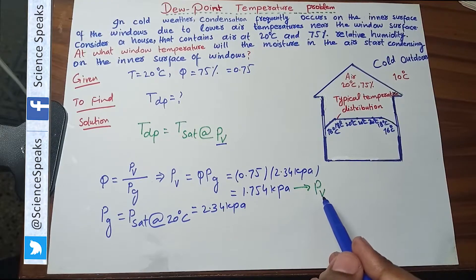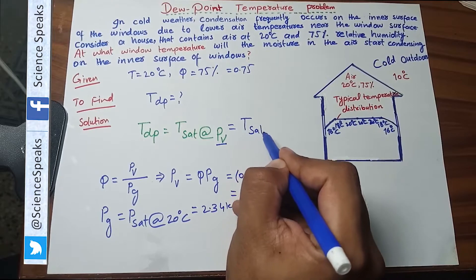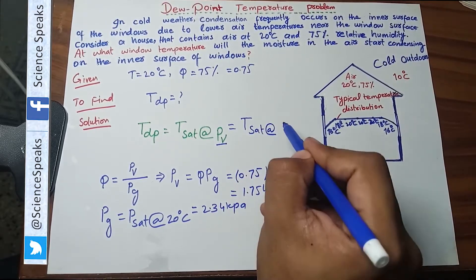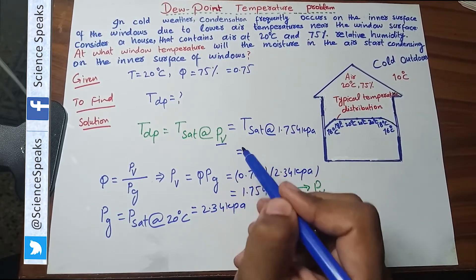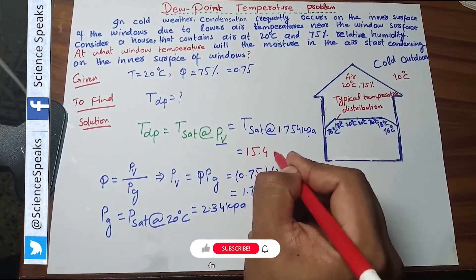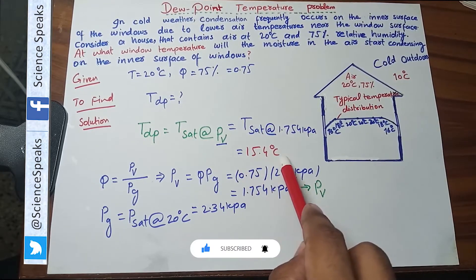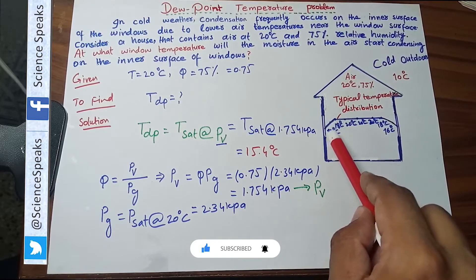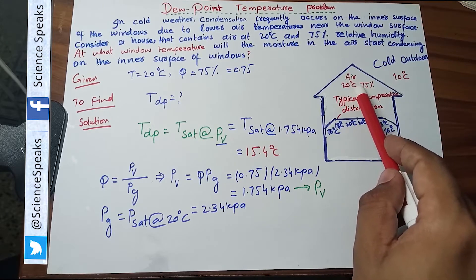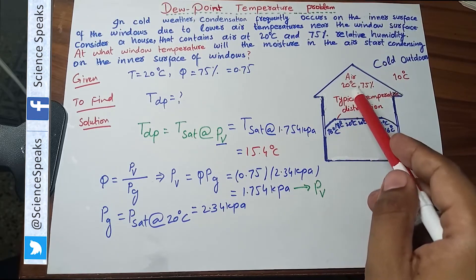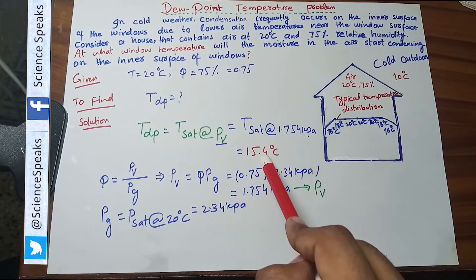Corresponding to this vapor pressure the value of saturation temperature will be the dew point temperature. So T saturation at 1.754 kilo Pascal. From table the dew point temperature is 15.4 degree centigrade. When indoor air will achieve temperature 15.4 degree centigrade at the window you will start seeing water droplets. Water drops will come from air because air has been cooled at constant pressure from 20 degree centigrade to 15.4 degree centigrade.